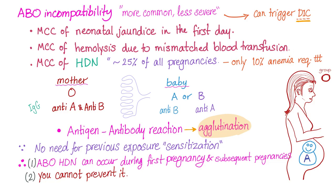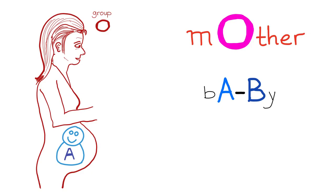Here is a quick review. Don't forget: 25% of all pregnancies will have ABO incompatibility, but only 10% will get anemia that requires treatment. ABO incompatibility can trigger DIC. ABO incompatibility does not require previous exposure — it can occur during the first pregnancy and you cannot prevent it. You cannot give the mother any drug to prevent ABO incompatibility from occurring. Remember: if the mother is blood group O and the baby is blood group A or B.